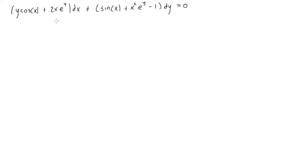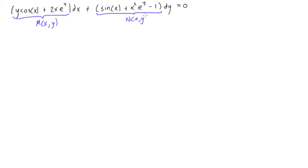Let's solve this differential equation. This looks suspiciously like an exact differential equation because we have a function of x and y attached to a dx plus another function of x and y attached to a dy, all equal to 0. So this looks like it would have the form where this is our M of x and y and this is our other function N of x and y. So we think this is exact, so let's check. The way we check is we take the partial derivative of M with respect to y, and if that equals the partial derivative of N with respect to x, then it's an exact equation.